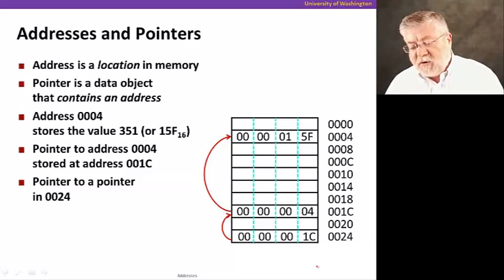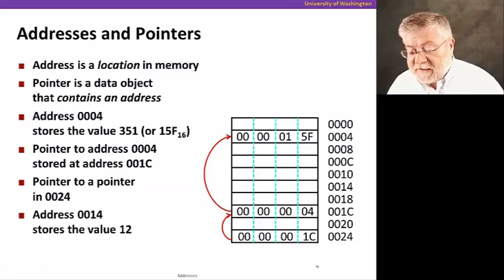So it's purely an interpretation question. Will I interpret this value as a pointer and therefore an address to another location? Or will I interpret it as a value? That's the distinction between addresses and pointers.